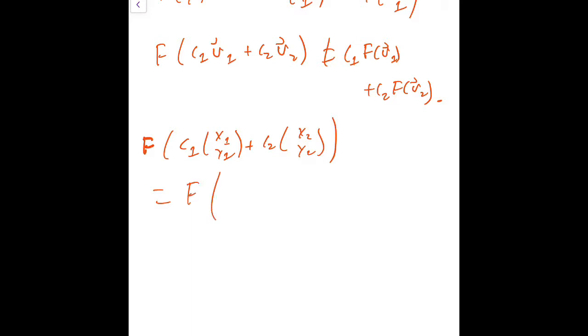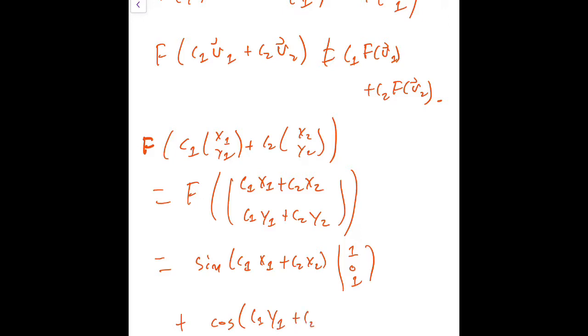To apply F to this vector, we have to combine it into one vector. So C1 x1 plus C2 x2 is in the top, and then C1 y1 plus C2 y2 is in the bottom. So this is going to be sine of (C1 x1 plus C2 x2) times the vector (1, 0, 1) plus cosine (C1 y1 plus C2 y2) times (0, 1, 1).